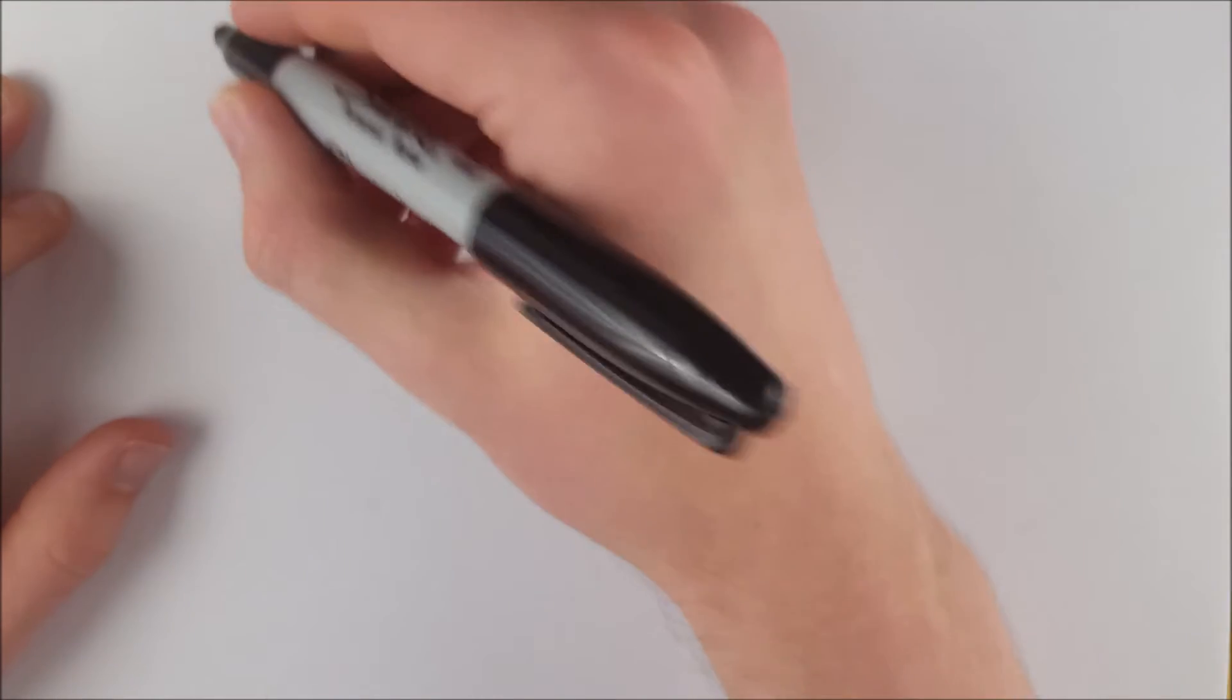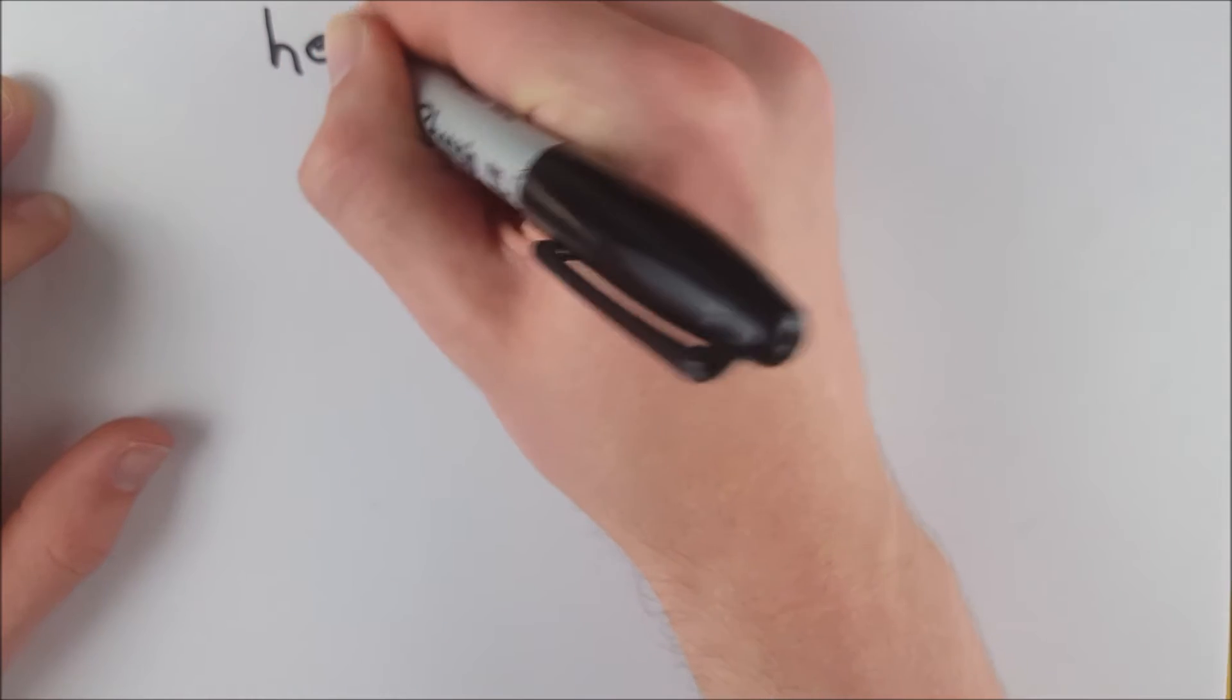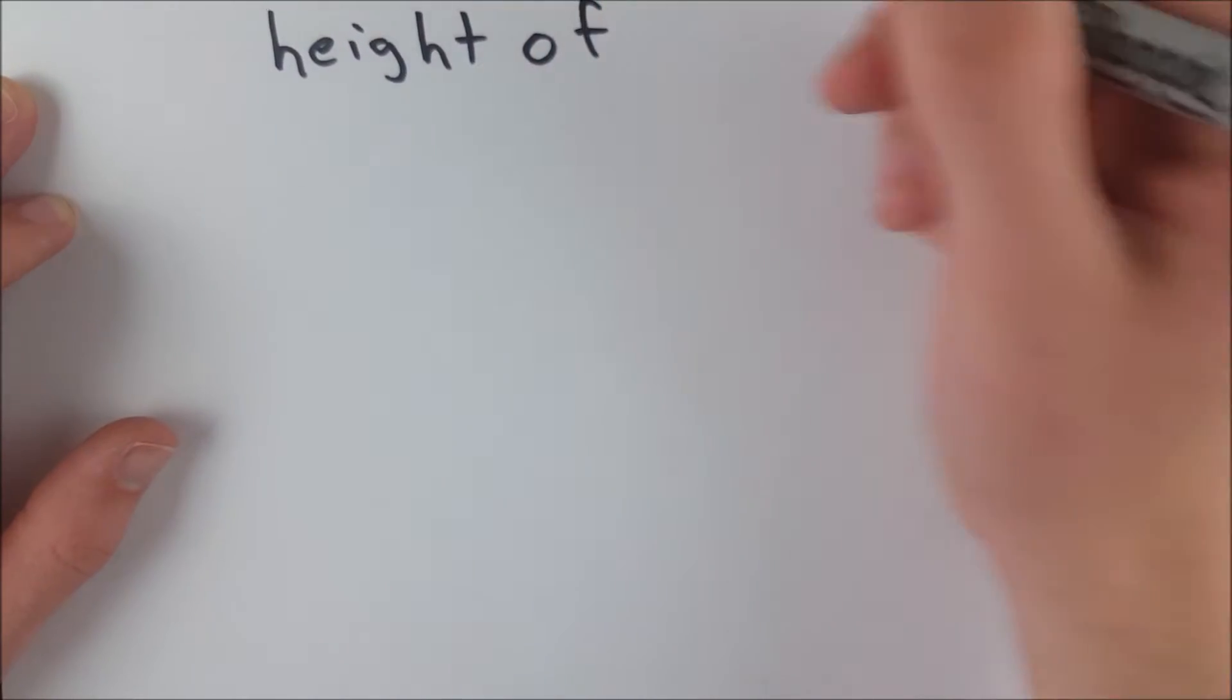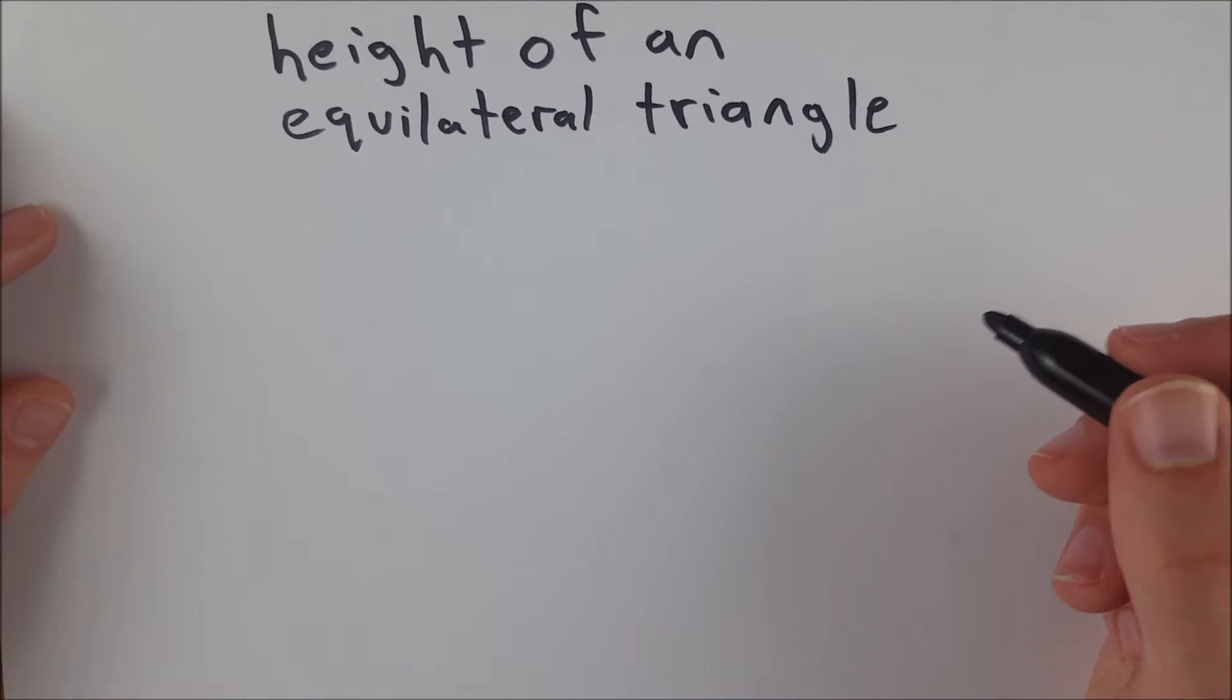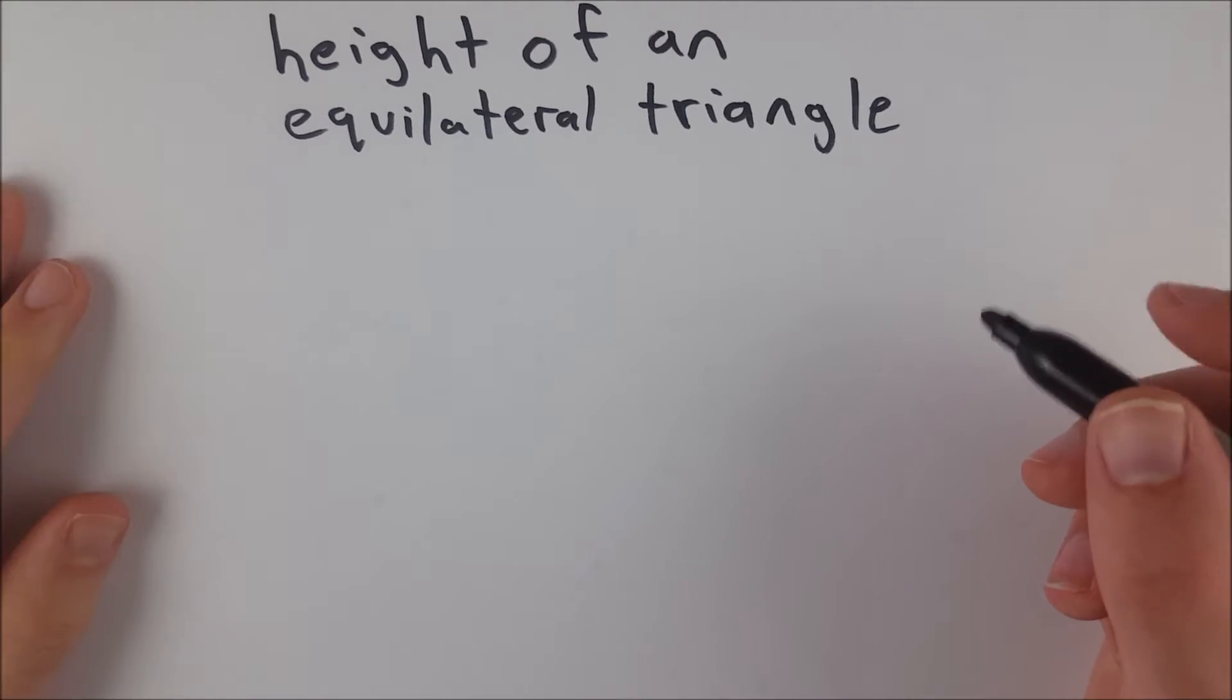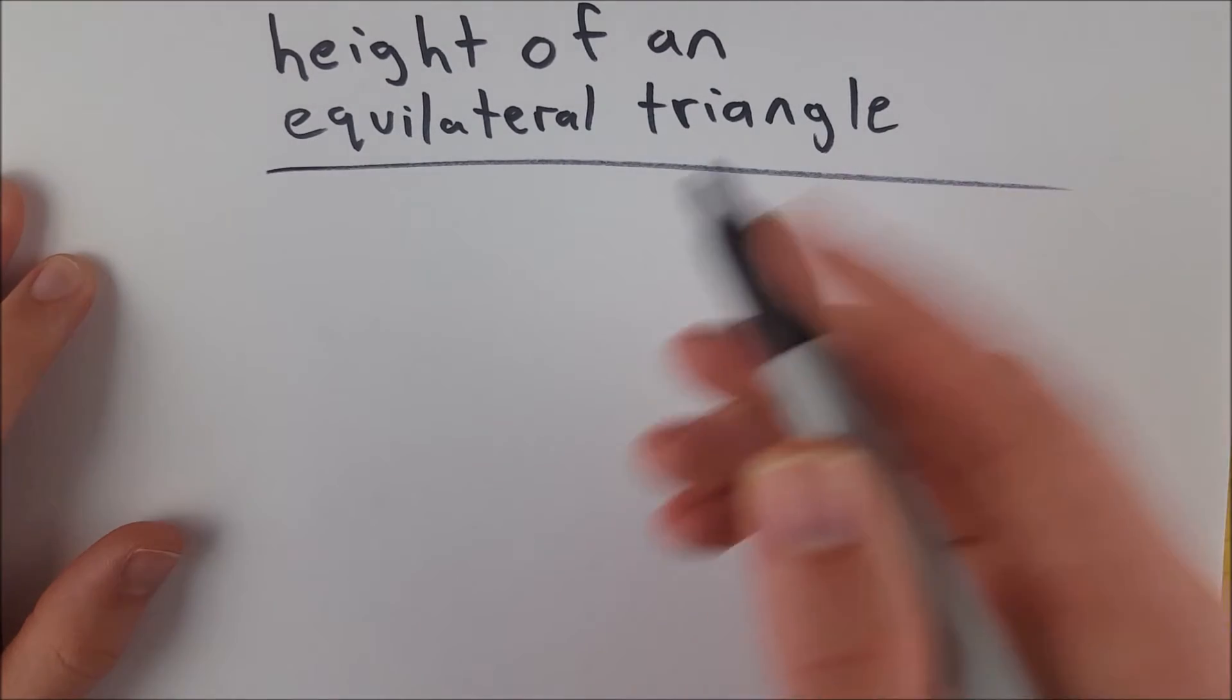Hello everyone, welcome to Wrath of Math. I'm your host, Sean E. And in today's video, we are proving the formula for height of an equilateral triangle. If you don't know what the formula is, then you might as well just keep watching, because we're going to prove it. And it's a nice, quick, easy proof. I think it's a nice little fun one. So I hope you enjoy. Let's get into it.